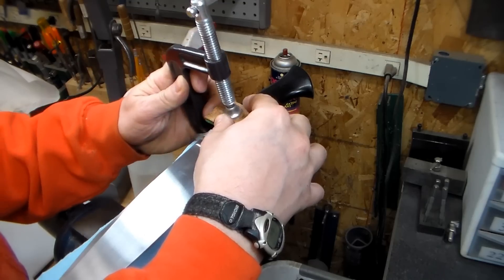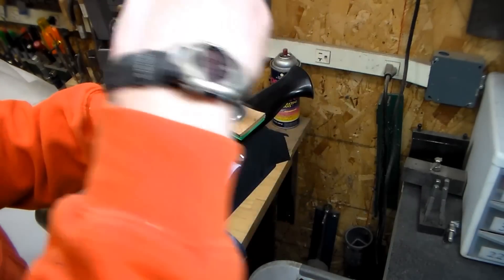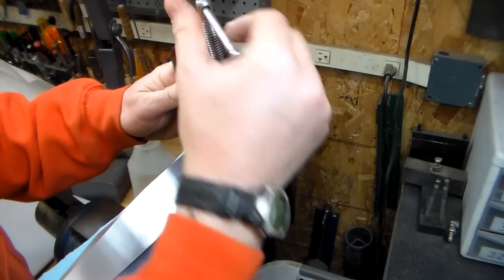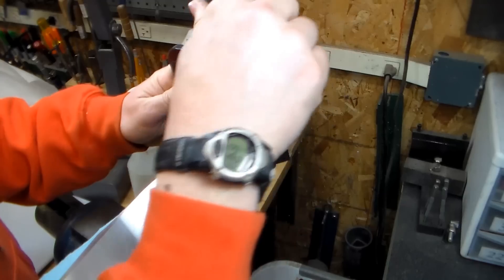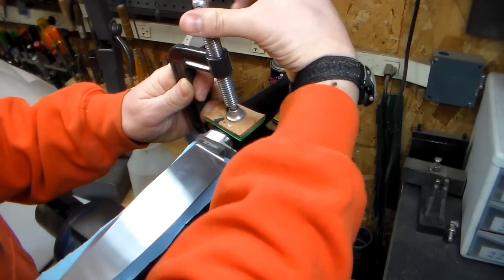And we've got our square scrap that goes on here. And then I'm just going to use a C-clamp. Usually I have to fiddle with it a little bit, because there is a crown to the side of the handle. So you're not clamping to a flat, flat surface.